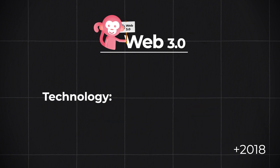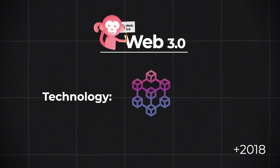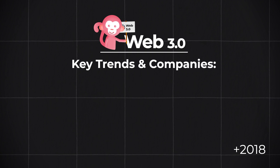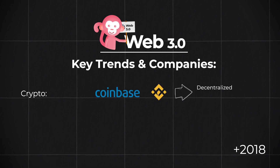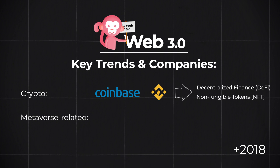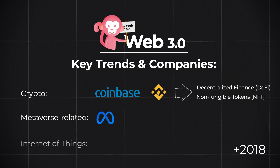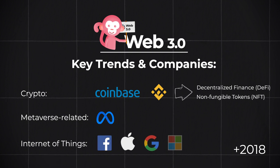The current biggest technology empowering Web 3.0 so far is blockchain. Key technologies and companies in Web 3.0 include cryptocurrencies and companies like Coinbase and Binance. Within crypto itself, we see trends in decentralized finance and non-fungible tokens. Metaverse-related tech companies like Facebook or Meta, and companies that make IoT products like Facebook, Apple, Google, and Microsoft are also key players.